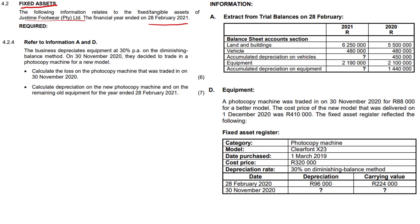Required: The business depreciates equipment at 20% per annum diminishing balance. On 30th November 2020, three months before year end, they decided to trade in a photocopy machine for a new model. Calculate the loss on the photocopy machine. At least we know if we work out this answer and get a profit, we might have made a mistake. Let's get into it.